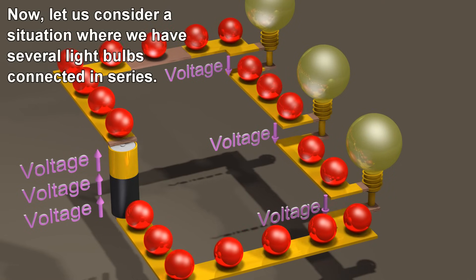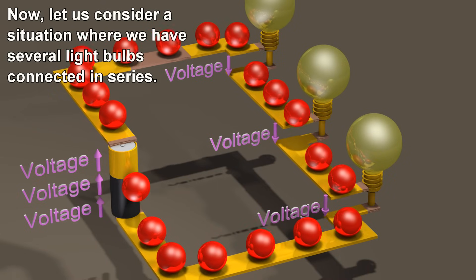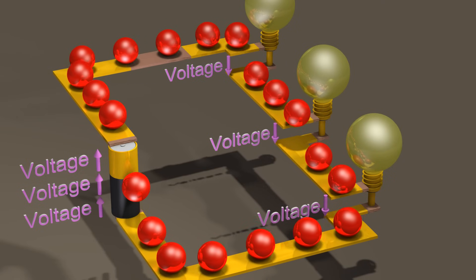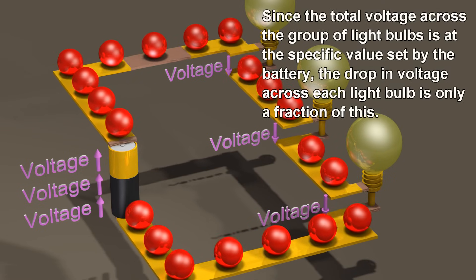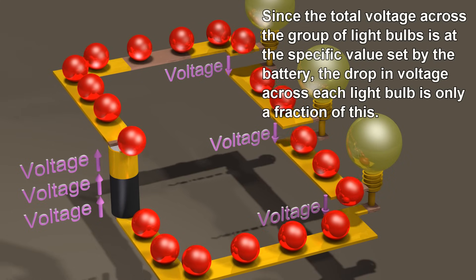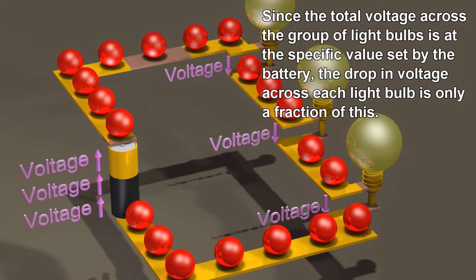Now, let us consider a situation where we have several light bulbs connected in series. Since the total voltage across the group of light bulbs is at the specific value set by the battery, the drop in voltage across each light bulb is only a fraction of this.